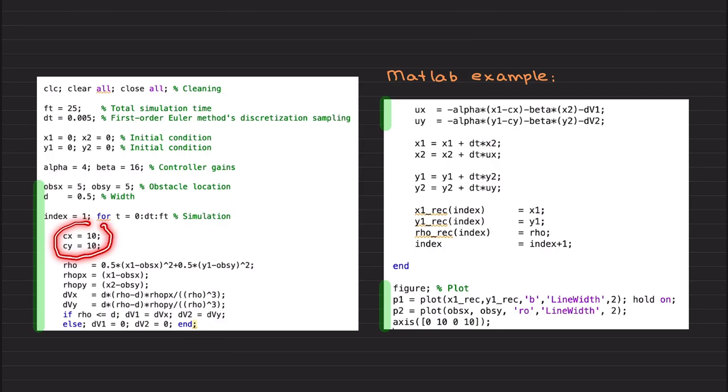These are the intent commands. We would like to go from 0, 0. By the way, X1 denotes X, Y1 denotes Y, X2 denotes X dot, and Y2 denotes Y dot. I forgot to mention. So our aim is to go from 0, 0 position to 10, 10. And on the middle, we have this obstacle.